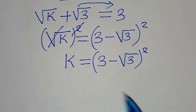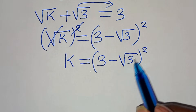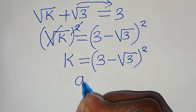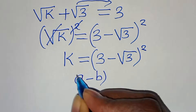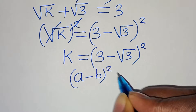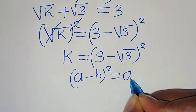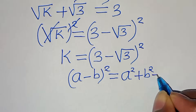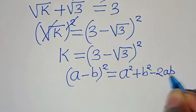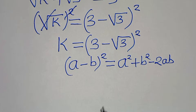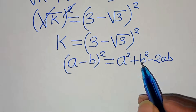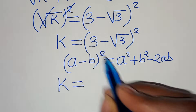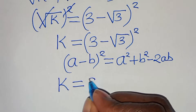Now, (3 minus square root of 3) squared is in the form of (a minus b) squared, which can be expressed as a squared plus b squared minus 2ab. Applying this algebraic identity, k equals 3 squared, which is 9.